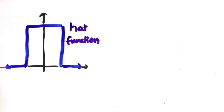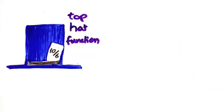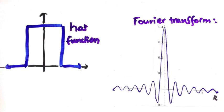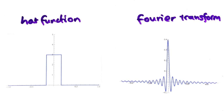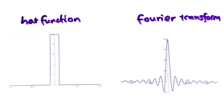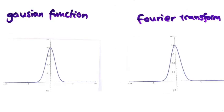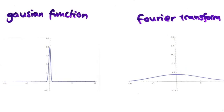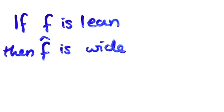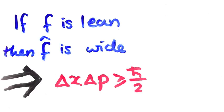This function is the hat function. As you can see, its Fourier transform is pretty crazy. As we squish the hat though, the Fourier transform gets more and more spread out. A similar thing happens if you start out with a Gaussian function. So you see, it's this property — that if a function is lean then its Fourier transform is wide, and vice versa — that causes the position-momentum uncertainty.